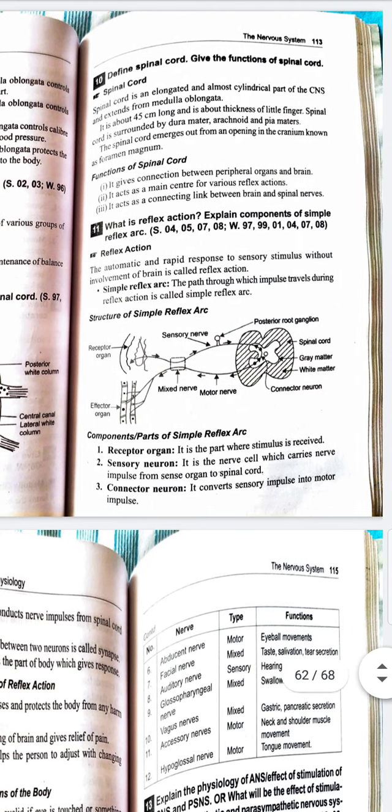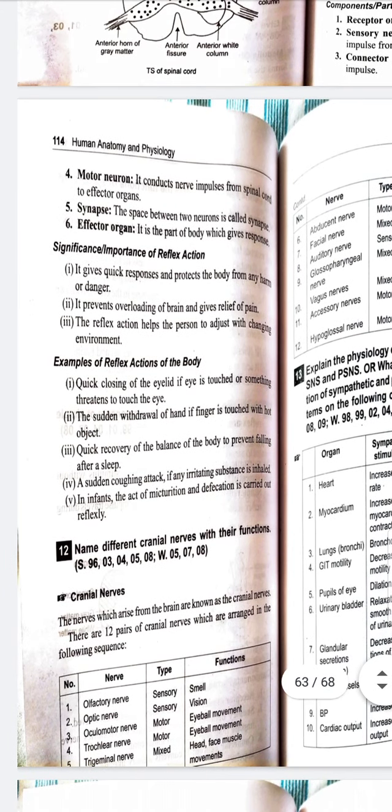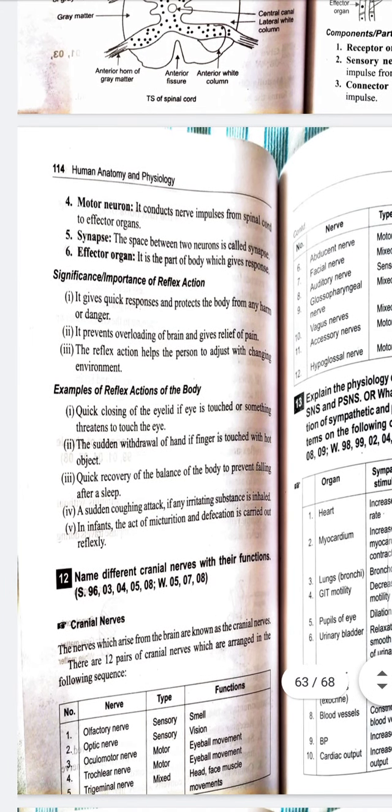Motor neuron - it conducts nerve impulses from spinal cord to effector organ. The motor neuron conducts nerve impulses from spinal cord to effector organ.